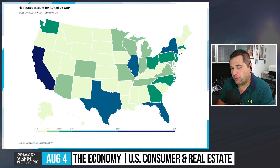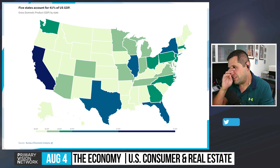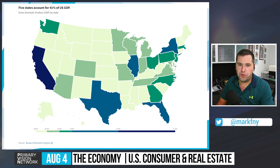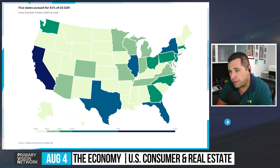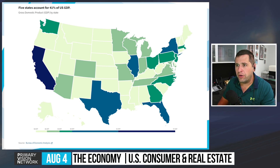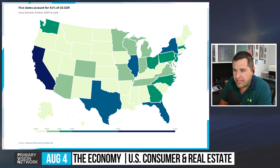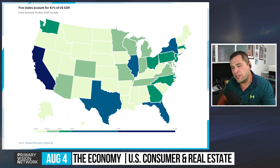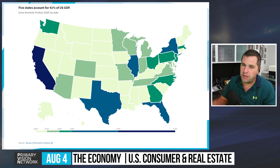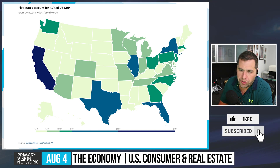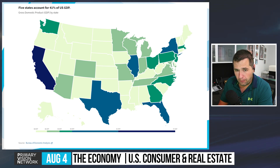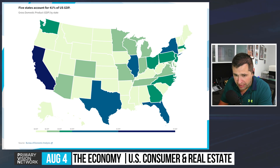The U.S. is a very large place with 50 states, each producing GDP differently. That's why we talk so much about regional Fed data — it captures different pieces, some more industrial, others more real estate-driven. Just five states account for 41% of U.S. GDP, so understanding where that economic pressure can come from is critical.